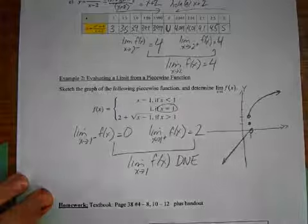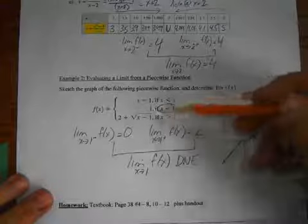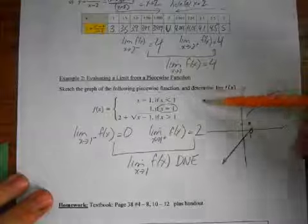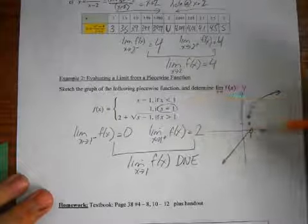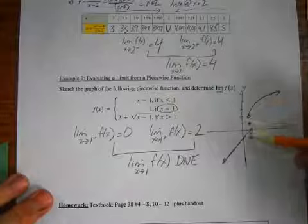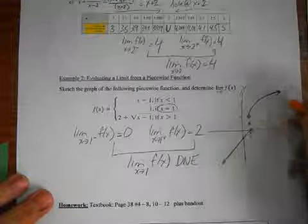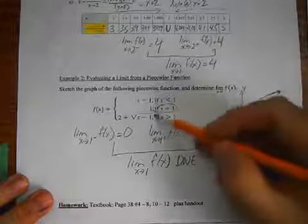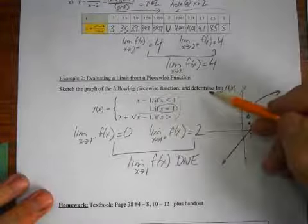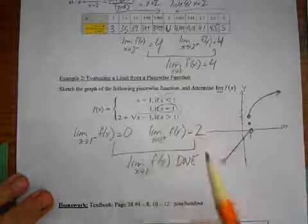When drawing piecewise functions, see where the breakpoints are — in this case it was x equals 1. You'll get different values depending on whether x equals, is greater than, or is less than the breakpoint. This is the key thing you always look at first — this is where the function breaks into its pieces.